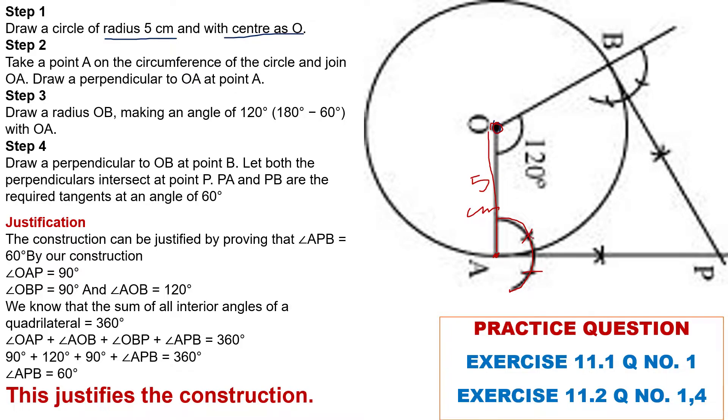When we put the pin point at these two points and intersect each other here, and we join, this is the perpendicular on OA. First perpendicular.